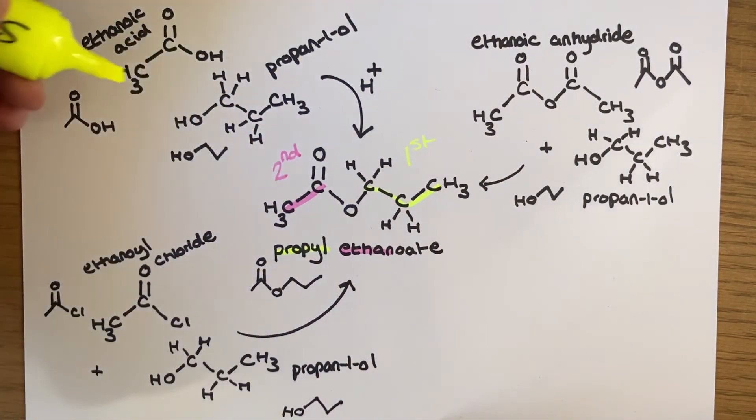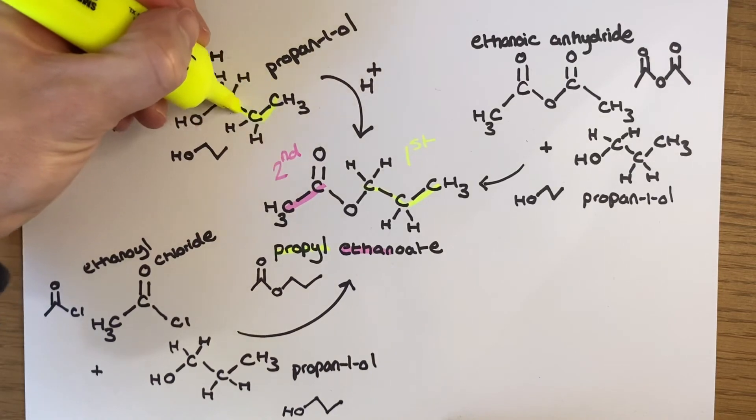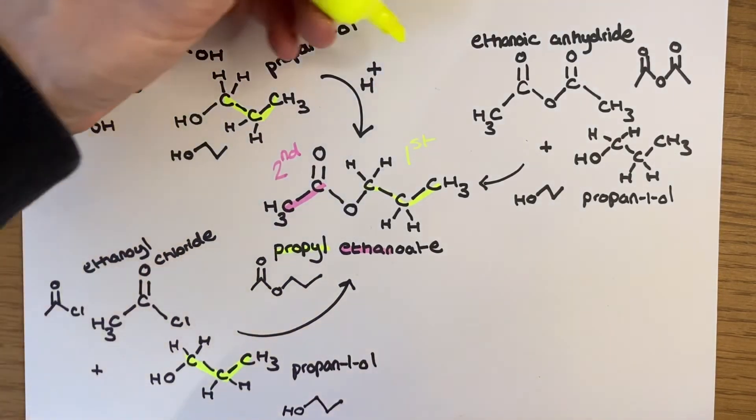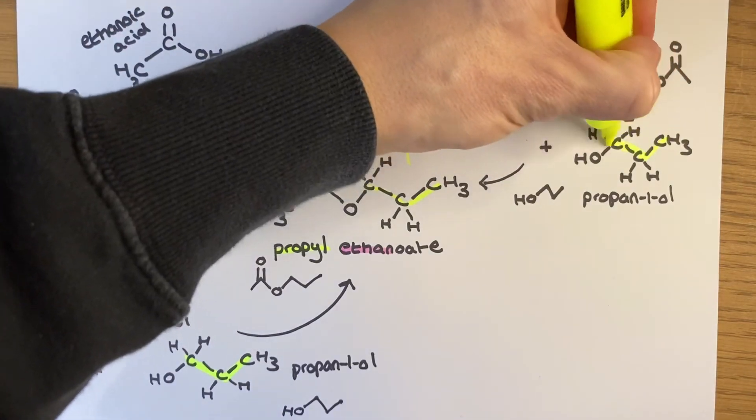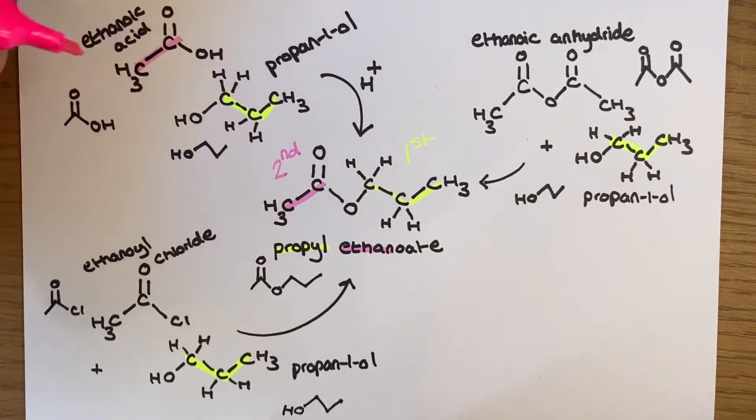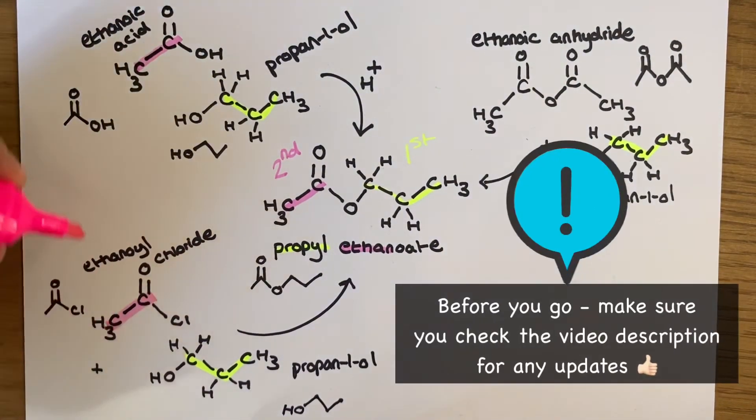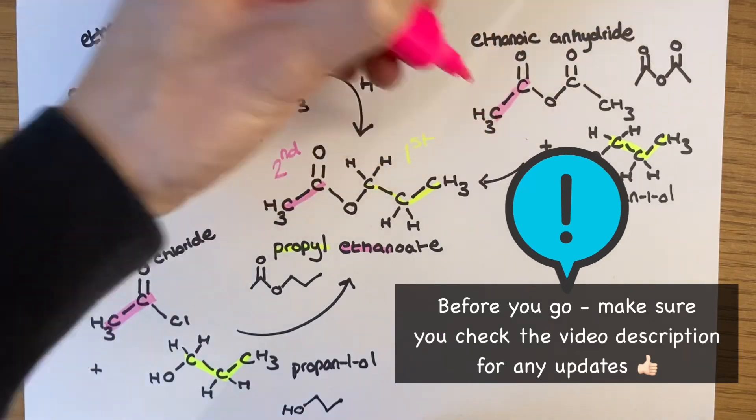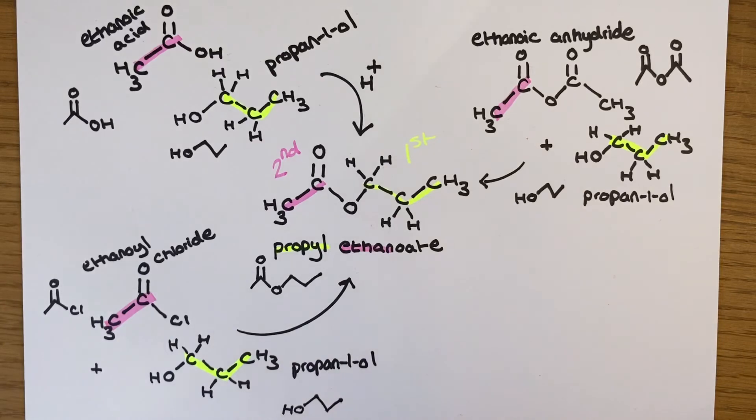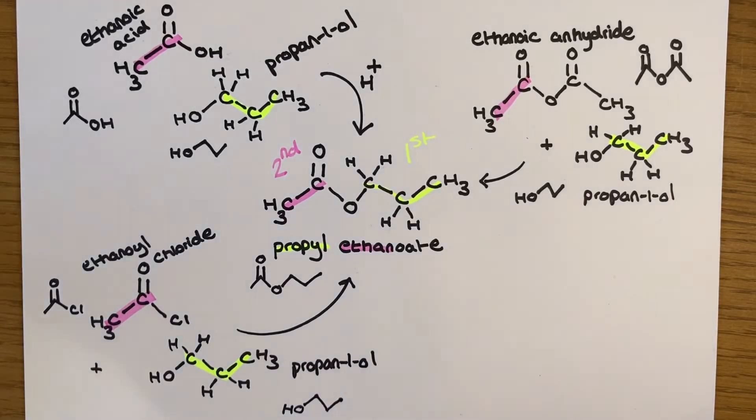For this final section of the video, I'm just going to give you a showcase with my highlighters of how you can track the different carbon chain lengths in the production of our ester, looking at the choice of reactants. Notice how the carbon chain section of the ester containing the C double bond O always comes from the carboxylic acid, the acid anhydride, or the acyl chloride. The other section of the ester has come from the propan-1-ol each and every time.